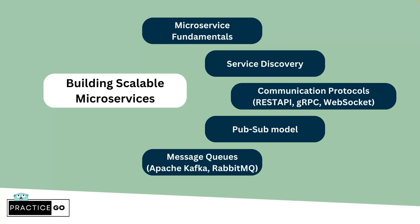Once your fundamentals are complete, it's time to expand and learn use cases. The first use case is microservices. Go's lightweight concurrency model, efficient runtime, and rich standard library can handle high traffic loads and scale horizontally, making it an ideal choice for microservices. You can start with microservice fundamentals on Martin Fowler's website. Then learn service discovery, communication protocols like REST APIs, gRPC, and WebSockets, the pub/sub model, and messaging queues like Apache Kafka and RabbitMQ.